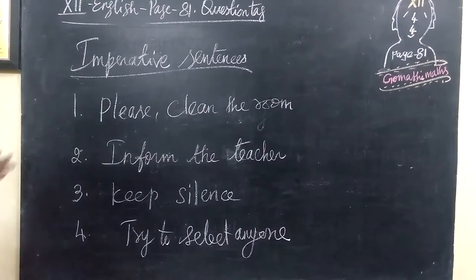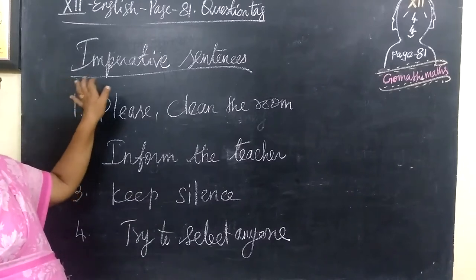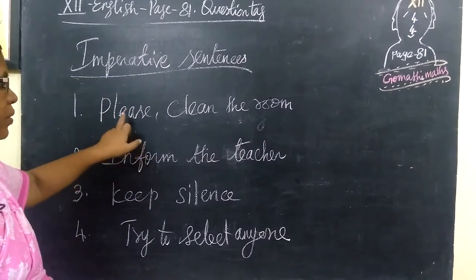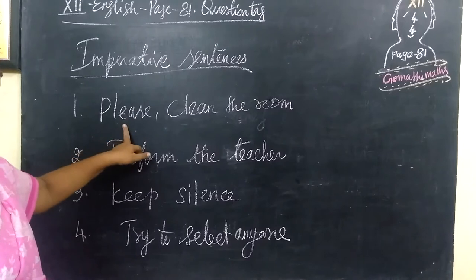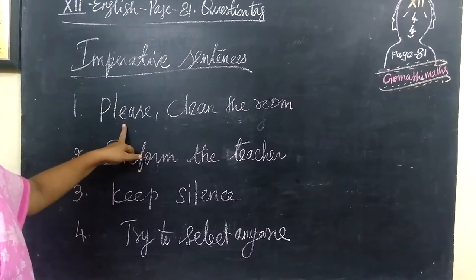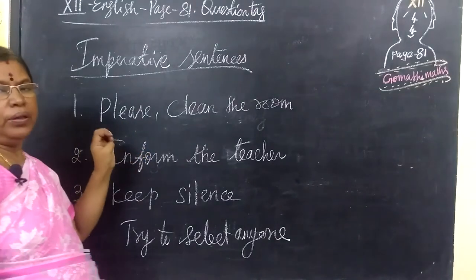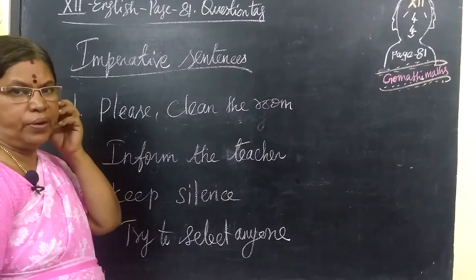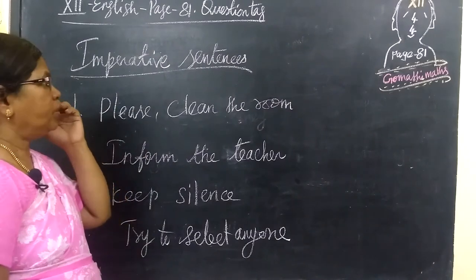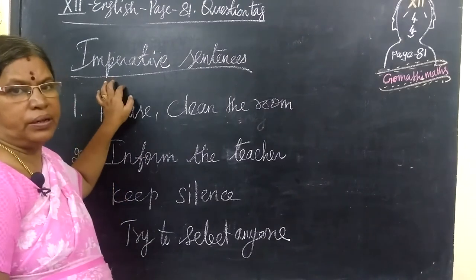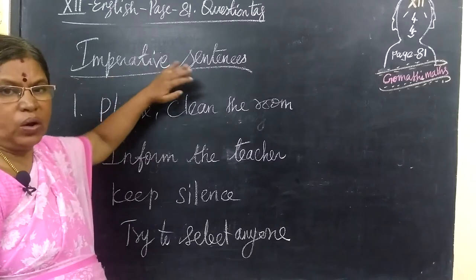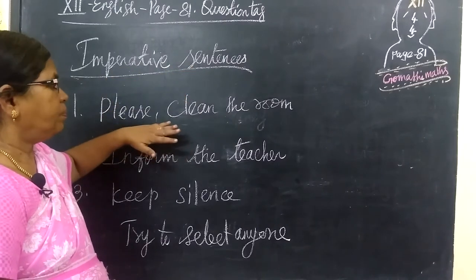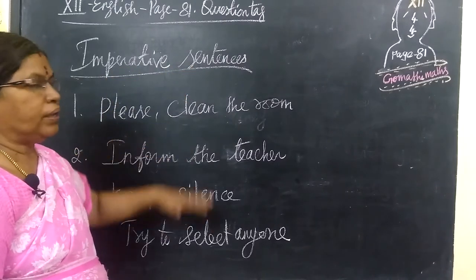Next type: imperative sentence. An imperative sentence starts like this: 'Please clean the board,' 'come to the school,' 'take the book,' 'keep silence' — in this way. We have imperative sentences involving ordering or requesting something.